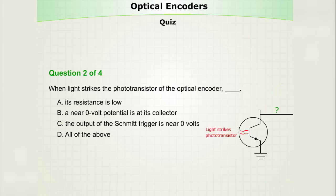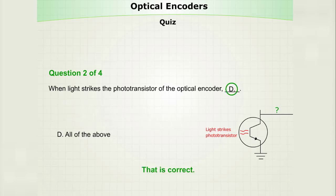When light strikes the phototransistor of the optical encoder, A, its resistance is low, B, a near zero volt potential is at its collector, C, the output of the Schmitt trigger is near zero volts, or D, all of the above. The answer is D, all of the above.